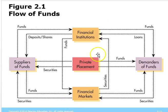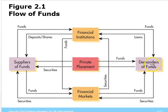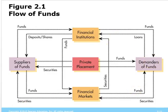Private placement directly links demanders to suppliers of funds, bypassing financial institutions and financial markets. Generally, financial institutions collect money from suppliers, bring it to the financial markets, and the financial markets bring it to the demanders of funds. You can see from all these arrows that funds can flow in many different routes from suppliers to demanders, utilizing or bypassing financial institutions, private placement, or financial markets depending on the particular transaction.